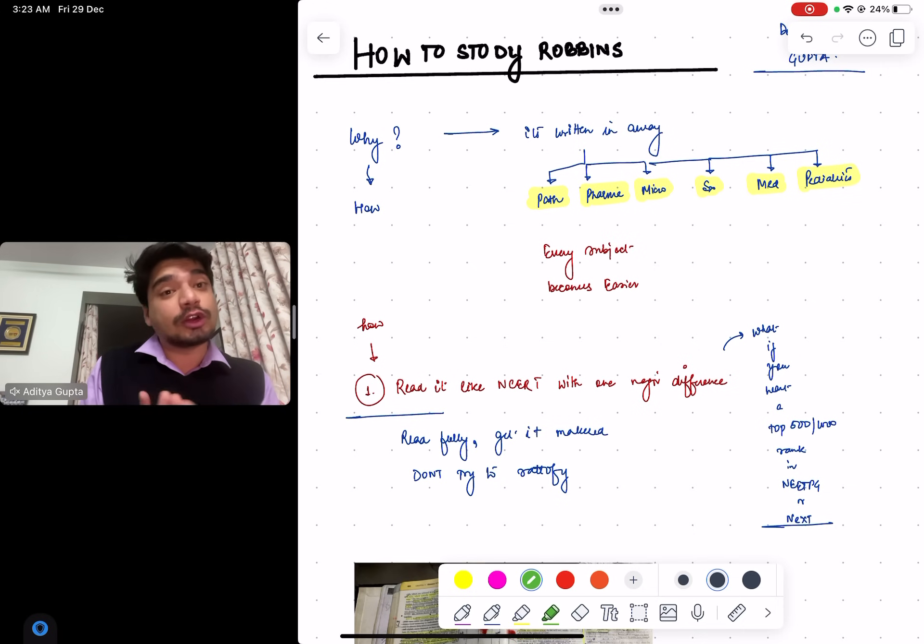When you're doing orthopedics bone tumors, it will be easier if you've done it in pathology. That's why it's very important to read Robbins properly. Now the problem a lot of people have with Robbins is that they feel it's too bulky. Although I don't personally feel that - the English is written in a lucid and easy to understand manner. But the main problem is they consider they won't be able to remember it later, so what's the point of reading it in the first place?